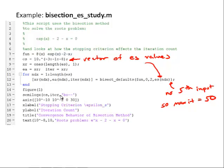And notice I have no fifth input, so that maximum iteration value is the default of 50. So it'll loop through that for loop, call the bisect_defaults function for each of those values of ES, ranging from 10 to the minus 3 to 10 to the minus 8. And then I generated a plot, note I used the semilog x command to generate a plot with logarithmic axis on the x-axis, and you'll see why in a minute.